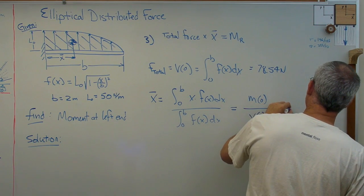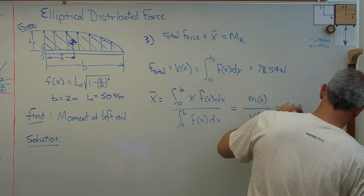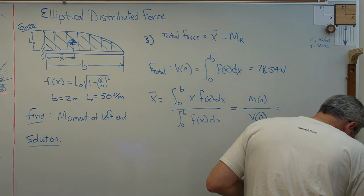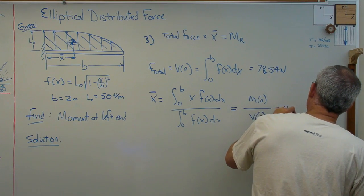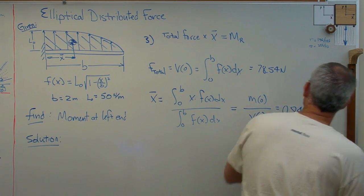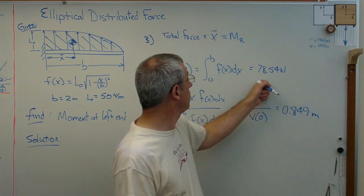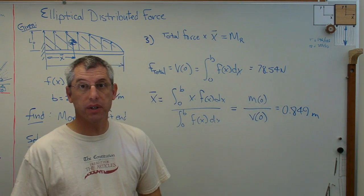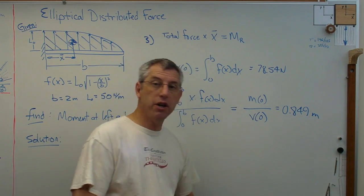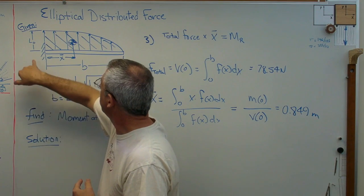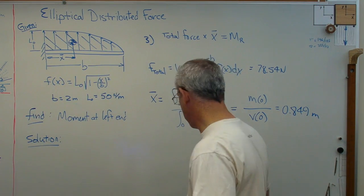You figure it out, you get 0.849 meters. And it turns out, 0.849 meters times that equals 66.67 newton meters. So, there you go. We've gone over three different methods for figuring out that reaction moment there.